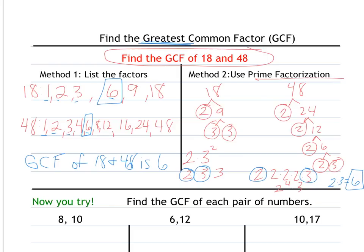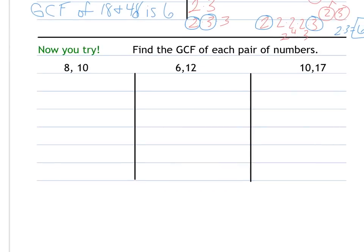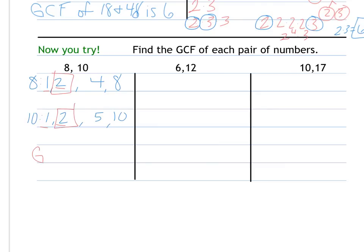Decide which method you like best and give it a try — I'll do both. For 8 and 10: listing factors of 8 — starting from the bottom — gives 1 times 8 and 2 times 4, so factors are 1, 2, 4, and 8. Factors of 10 are 1 and 10, 2 and 5. Common factors are 1 and 2. The largest is 2, so the greatest common factor of 8 and 10 is 2.